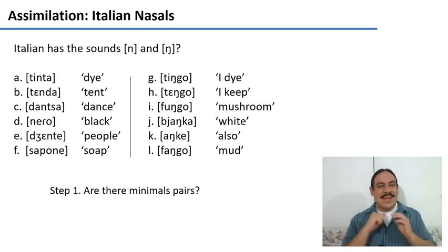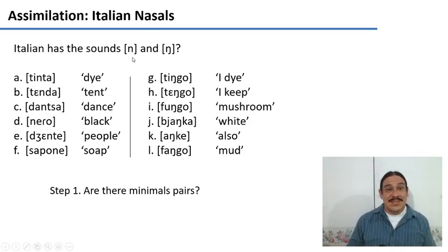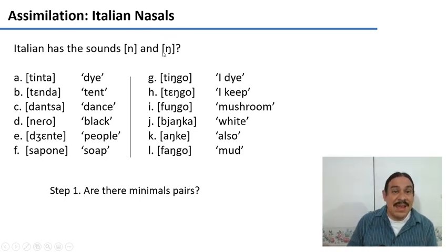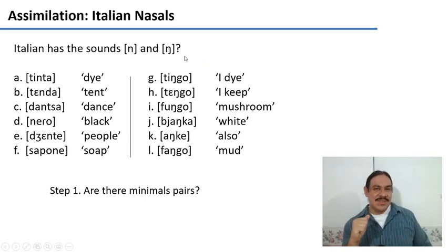Here's some beautiful Italian data. And this data has two nasals in it. The alveolar nasal n and the velar nasal ŋ, the engma. So the very first thing we need to do is to try to find minimal pairs for these two sounds. Give it a shot. Please pause the video.